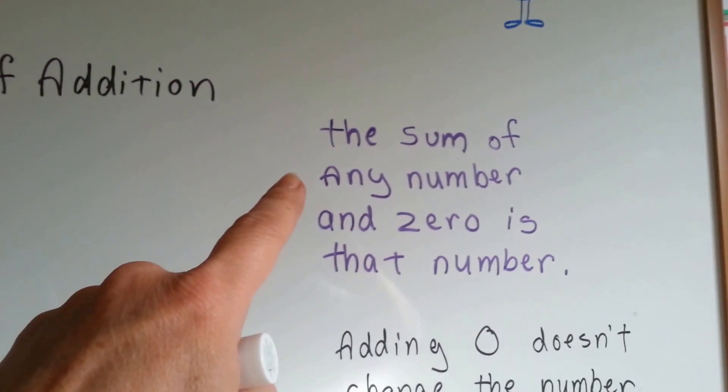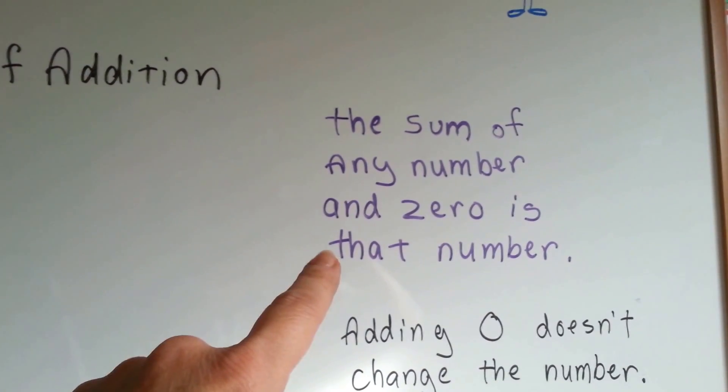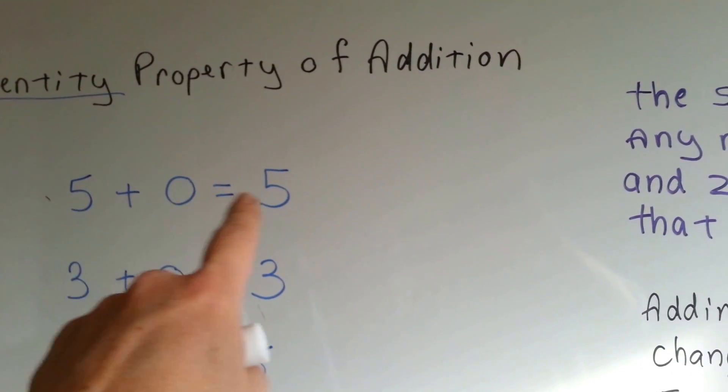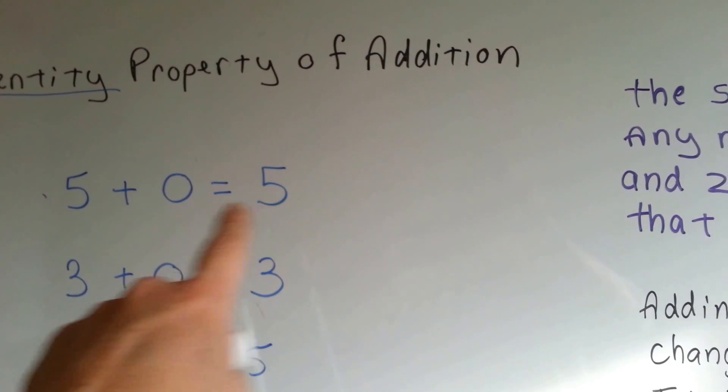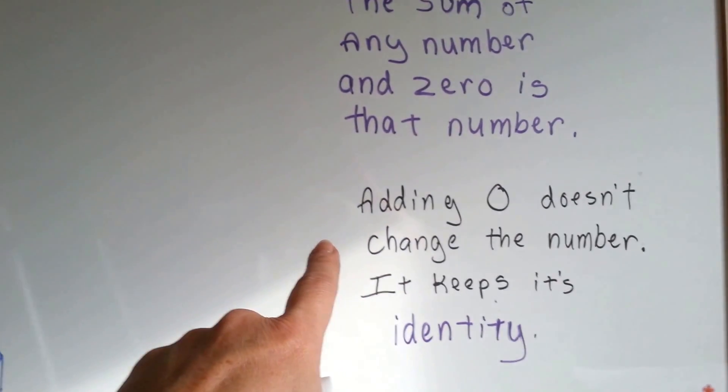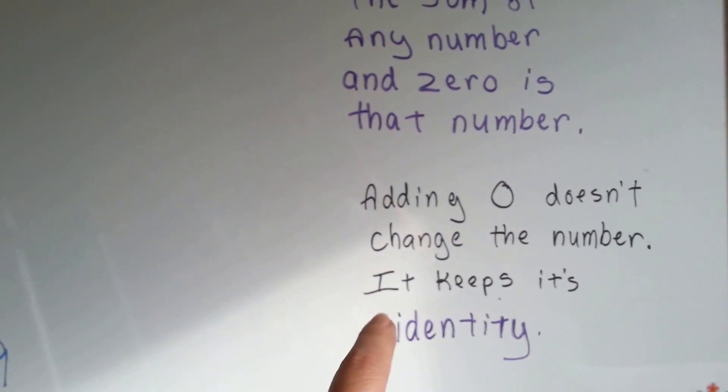The sum of any number and zero is that number. That means the sum of five and zero is going to stay five. Adding zero doesn't change the number. It keeps its identity.